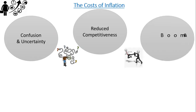The third cost is boom and bust economic cycles. High inflationary growth is unsustainable and is usually followed by recession. By keeping inflation low, it enables a long period of sustainable economic growth. This is why most countries target an inflation rate of 2% as an objective.